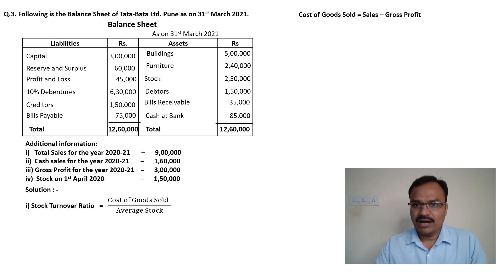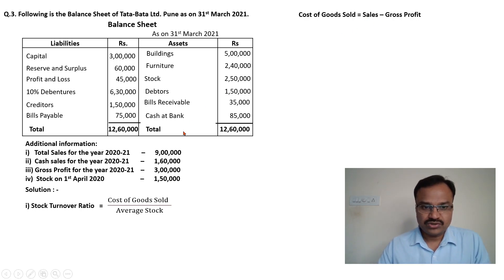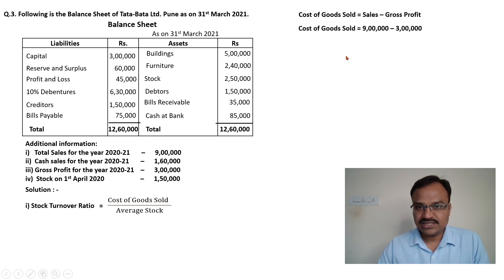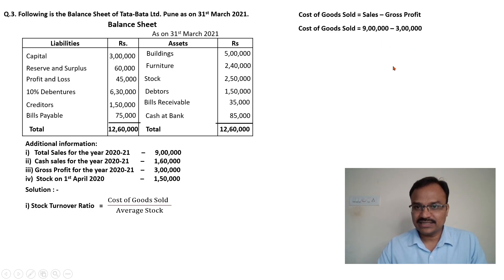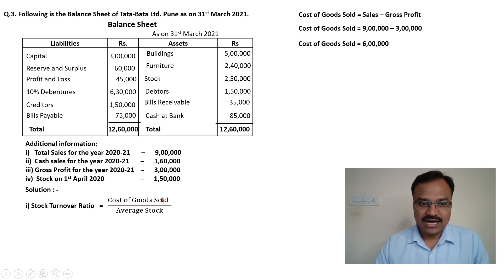I am going to use this simple formula: sales minus gross profit gives us cost of goods sold. From the additional information, total sales are 9 lakh and gross profit is 3 lakh rupees. So 9 lakh minus 3 lakh gives us rupees 6 lakhs. So the cost of goods sold is rupees 6 lakh.